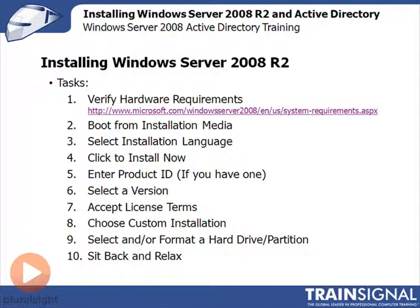Next, you'll be asked to select a version of the operating system — whether you want Standard, Enterprise, Data Center, or Web Edition. Depending on what version you have, you'll check a box and accept the license terms. You'll then need to choose Custom or Upgrade. In this case it'll have to be Custom because this is a blank machine — we're not upgrading. We'll talk a little bit about upgrading later on in this course.